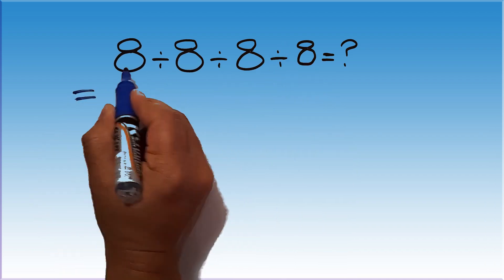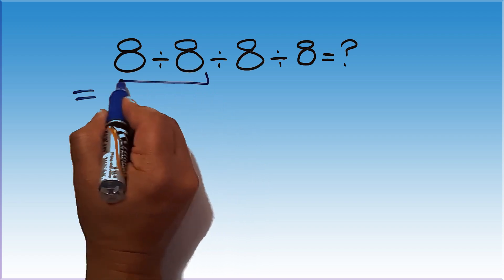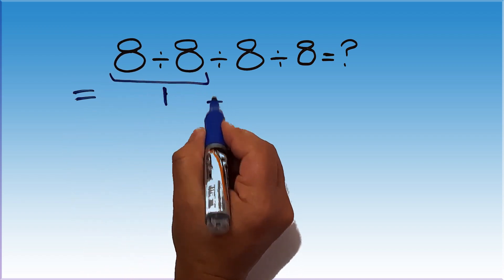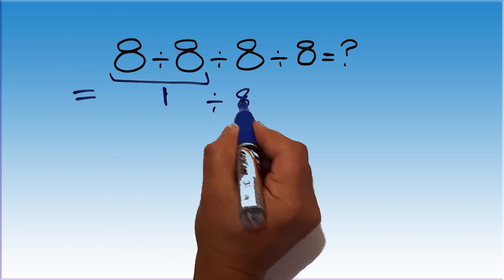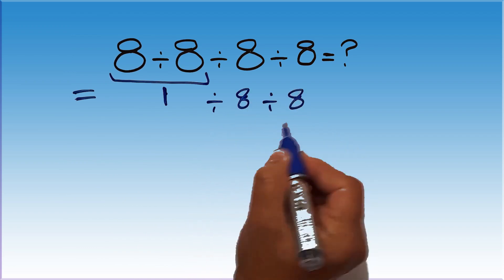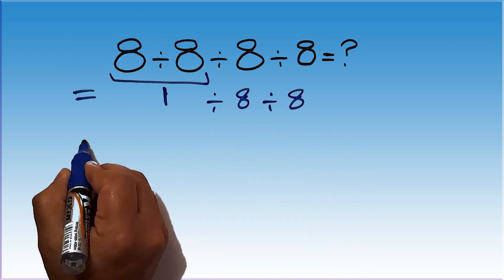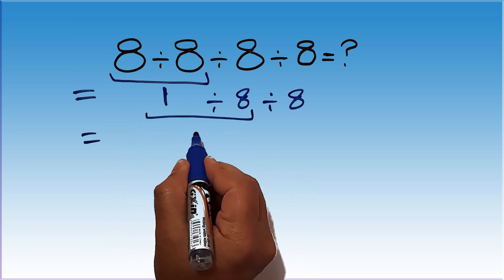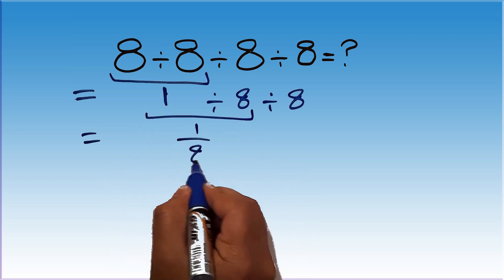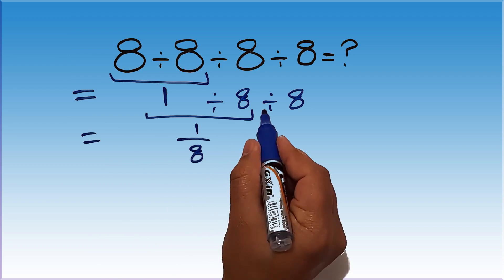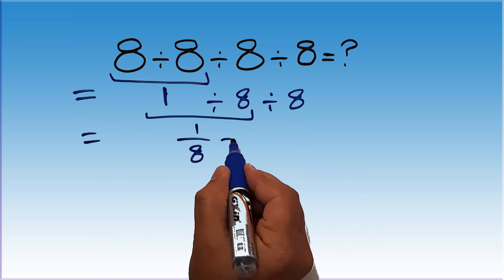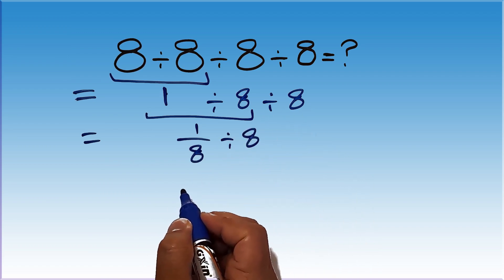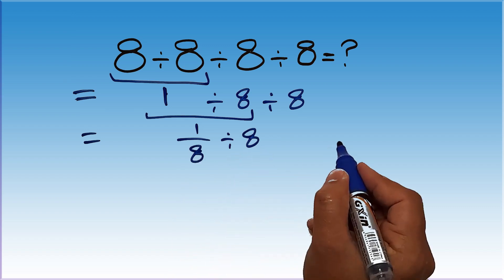8 divided by 8 gives us 1. So, 1 divided by 8, and again divided by 8. 1 divided by 8 can be written as 1 over 8. So, 1 over 8 divided by 8. And here, according to the KCF rule: